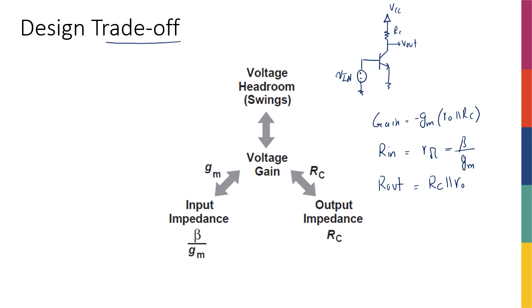And we have an Rout that is equal to RC in parallel with R0. Again, if there is no early effect, this would be just RC. Imagine that you have this gain expression, and somebody asks you to increase the gain by a factor of 2. We said that I could increase it by increasing GM by a factor of 2, but I know that GM is IC over VT, right?